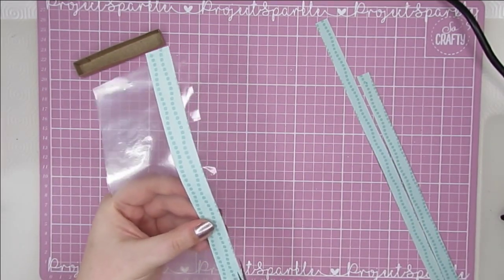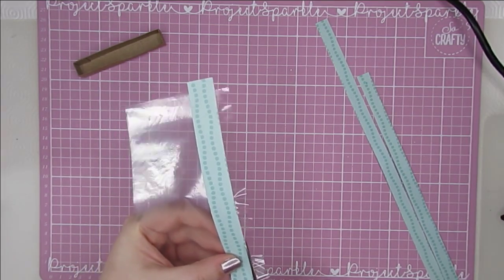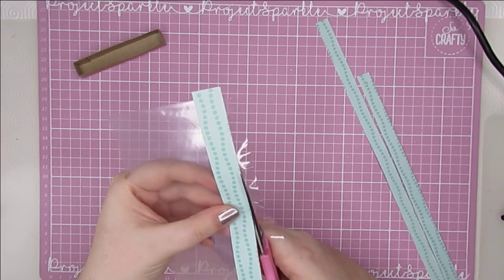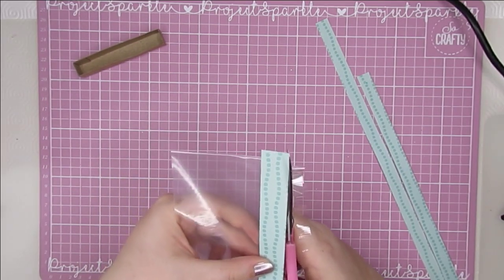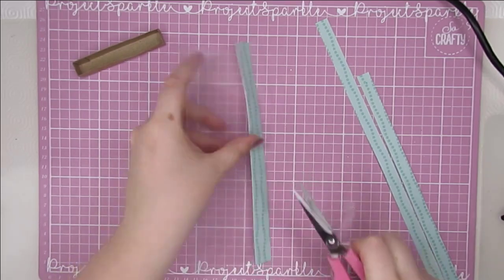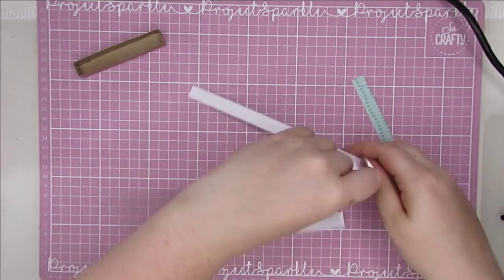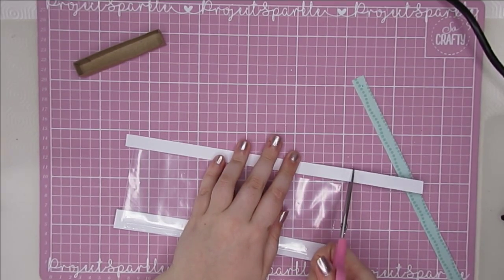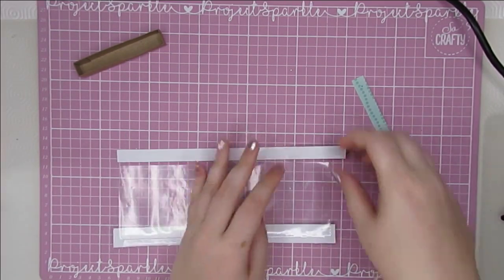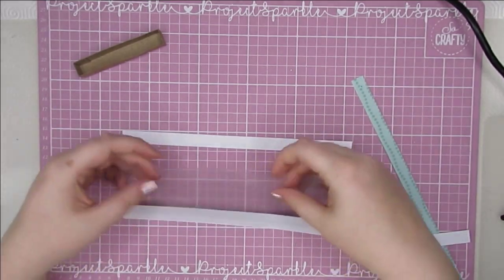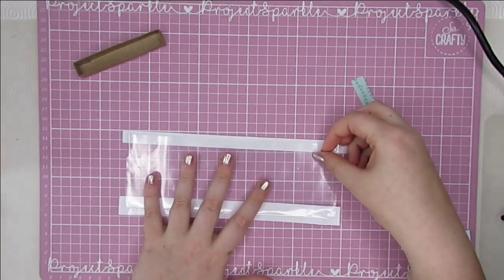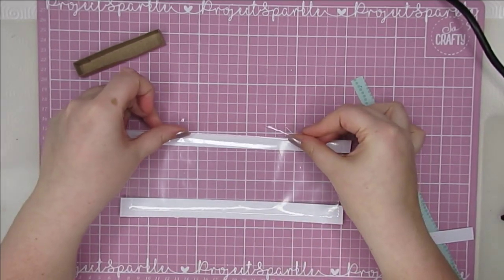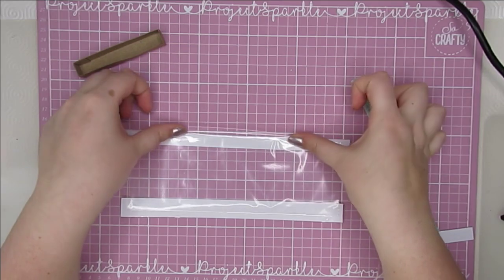So it'll be on there like that. I'm going to trim off the extra sellotape. You might not need to do this step but I'll show you because it's the way that I'm doing this one. Then you want to do the same with this piece. Again I need to trim this one. You want to just make sure that the clear piece is overlapping it slightly, and then I'm going to use more sellotape to hold this bit on here.